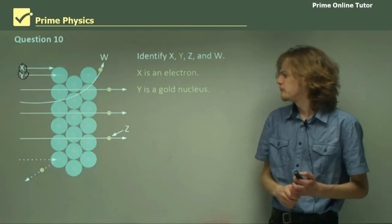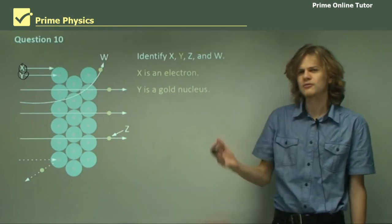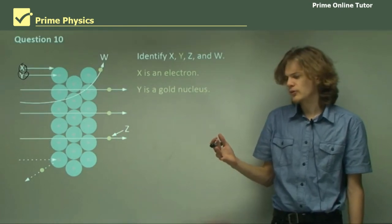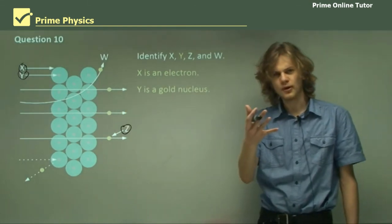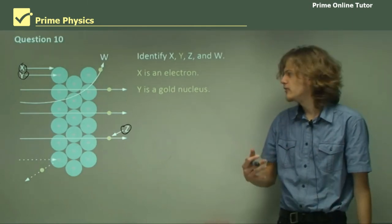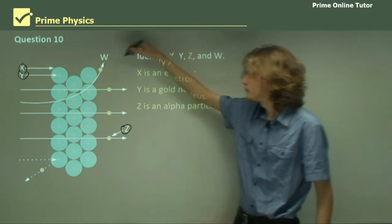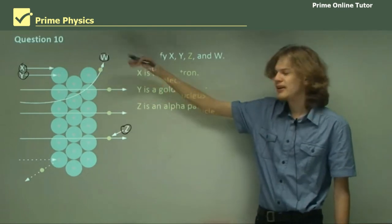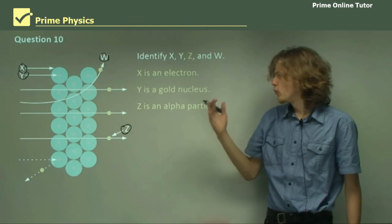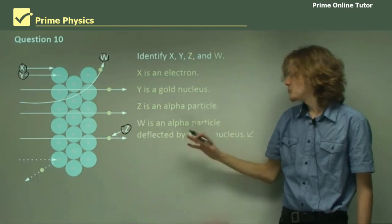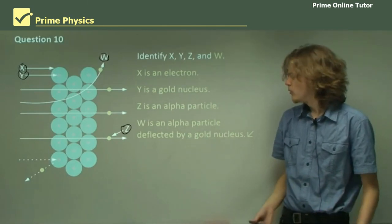What about Z and W? Z is just a line coming from left that's gone straight through without being deflected at all. So, what exactly are we trying to measure the deflection of in this experiment? It must be alpha particles. That's right, because we were using alpha radiation to fire at the gold foil. So, Z must be an alpha particle. We have one more, W. It looks pretty similar to Z, except that it's being bent away by hitting the foil. So, once again, this is an alpha particle. But this one has been deflected by one of the gold nuclei in the experiment.